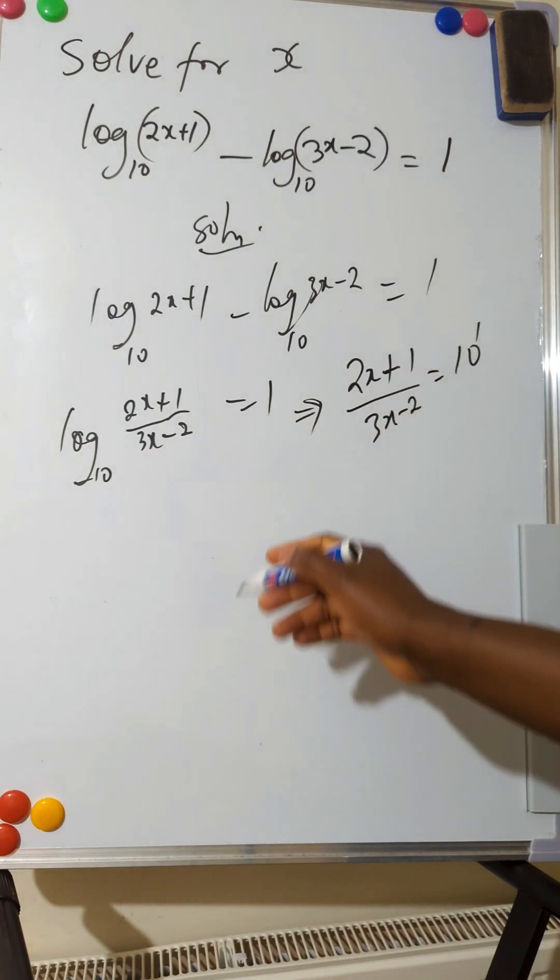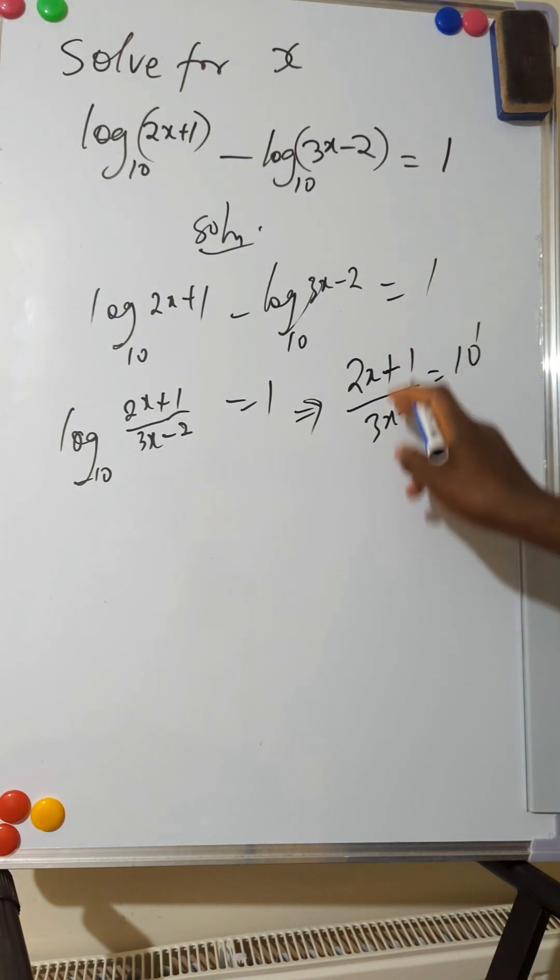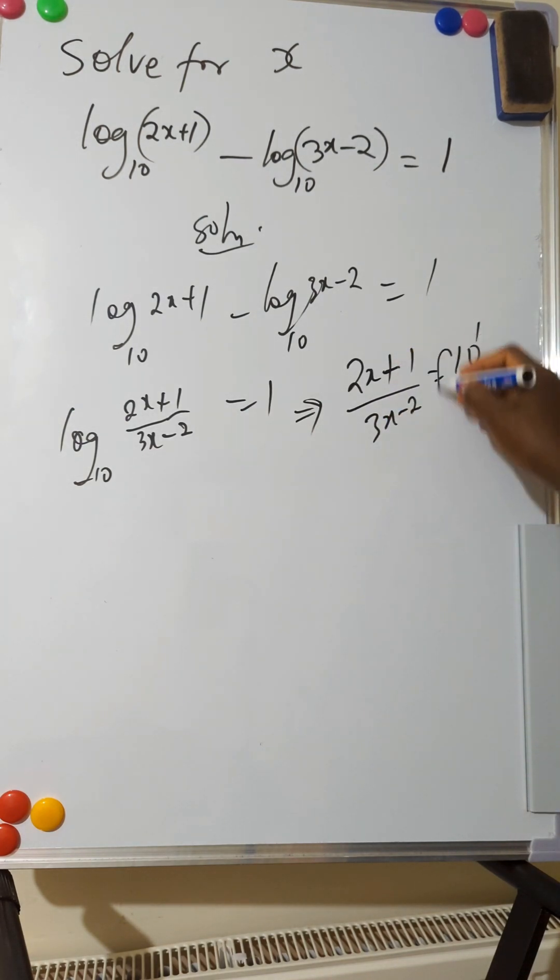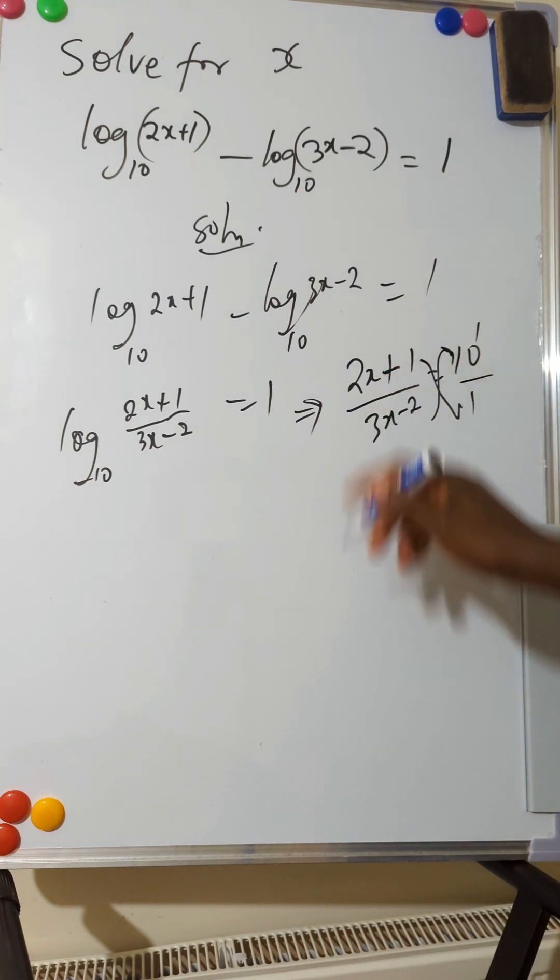And 10 raised to power 1 is the same thing as 10. So you use 10 to multiply, you cross multiply at this point. 10 will multiply everything here, 1 will multiply everything here. So 1 multiplied by everything here, it still remains the same.